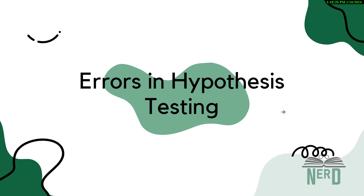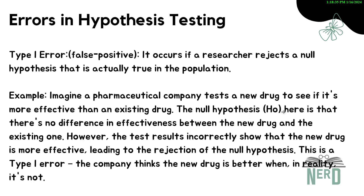Now we'll talk about errors in hypothesis testing — this is very important and was asked in an exam in 2024. Imagine you're a judge in a talent show and you have to decide if a performance is truly awesome or just okay. Sometimes you might make a mistake — that's pretty much what happens in research with hypothesis testing too. There are two main errors in hypothesis testing that researchers can make.